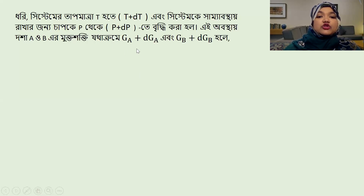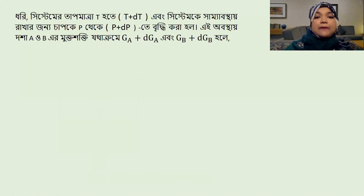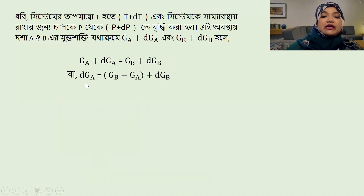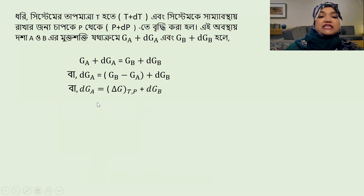এই অবস্থায় তাহলে দেখো, আমাদের তাপমাত্রা পরিবর্তন করি, তাহলে ওই সিস্টেম কে সাম্যাবস্থায় রাখার জন্য আমার চাপটাকে বৃদ্ধি করতে এবং সে জন্য A ক্ষেত্রে আলাদা মুক্ত শক্তি হবে এবং B ক্ষেত্রে আলাদা মুক্তি হবে। সে ক্ষেত্রে তাহলে এখন যদি dG_A থাকে জি এপাশে নিয়ে গেলে তাহলে G_B minus G_A plus dG_B হবে। (In this condition, if we change the temperature, to keep the system in equilibrium we increase pressure, so phase A will have a separate free energy change dG_A, and for phase B separately. Then G_B minus G_A plus dG_B.)